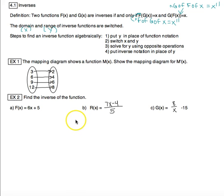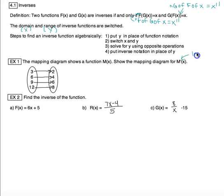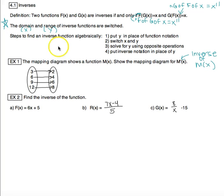Here's a mapping diagram showing a function named m of x, and it wants us to find the mapping diagram for m prime of x — that's the notation for the inverse of m of x. Sometimes they'll give you the prime notation and sometimes they'll say the word 'inverse,' but they mean the same thing. With mapping diagrams, we're going to switch the domain and range. The arrow points to the output and starts at the input, so for every input-output pair we switch them.